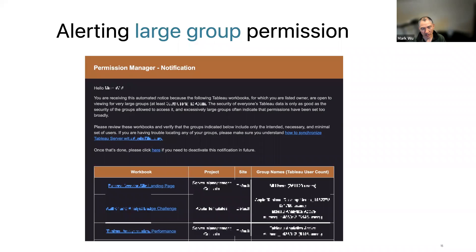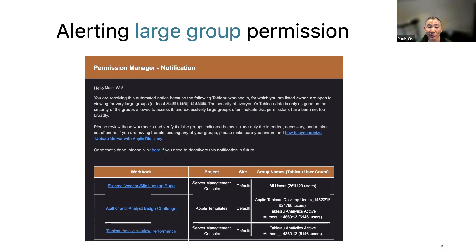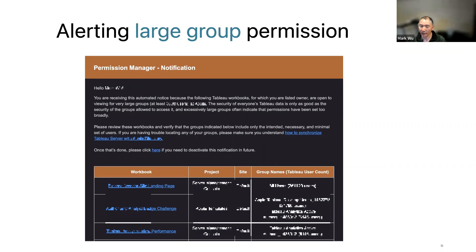We also built an opt-out feature because the use may be valid and I don't want to keep bothering them. Since I'm not deleting, I just send a reminder. The email says: 'Once this is done, please click here if you need to deactivate this notification in the future.' They click the link, it writes back to my database, and future alerts for that particular item are suppressed. If they did nothing, the email continues to be sent.